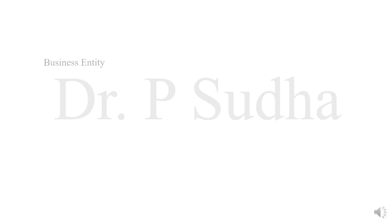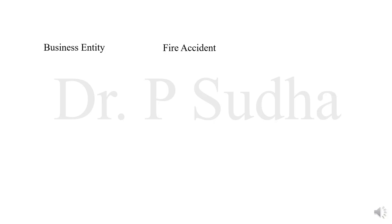Every business organization faces certain types of risk. One such risk is the risk of fire accident. If a fire happens in the premises of the business, the stock will get destroyed, the assets will get destroyed, and the business will not be able to function — it has to close its activity for a certain period, resulting in loss of profit. To protect the business firm against the risk of fire accident, they will take an insurance policy. If a fire accident happens, the insurance company will compensate the loss.